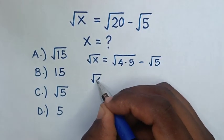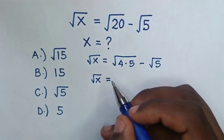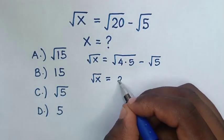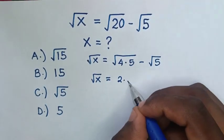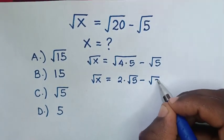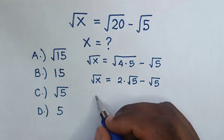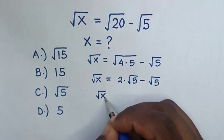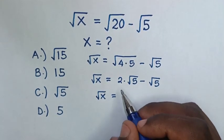Square root of x equals square root of 4, which is 2, times square root of 5, minus square root of 5. So square root of x equals 2 square root of 5 minus square root of 5.